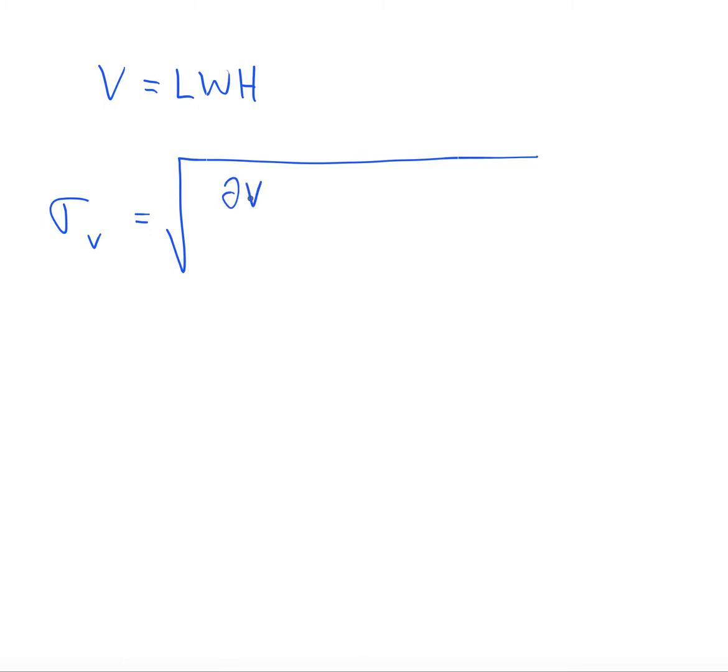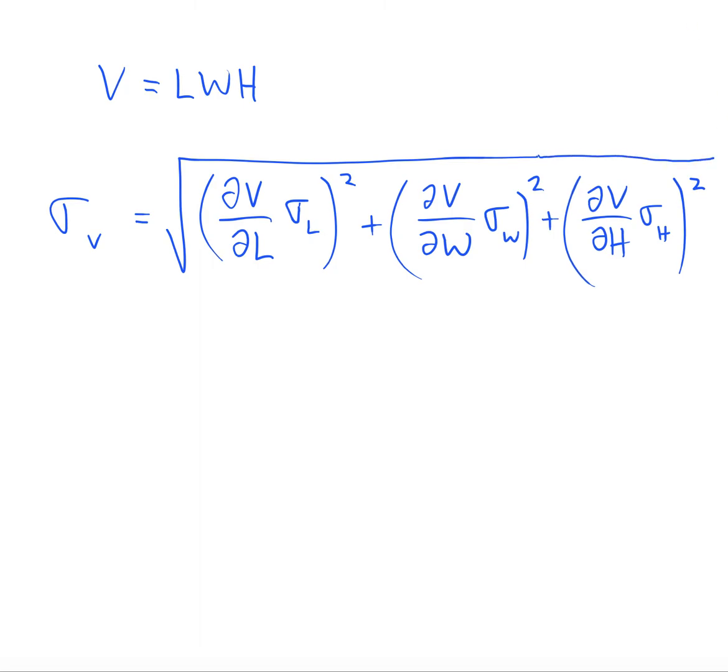And the true formula here for our uncertainty will be this: the square root of the partial derivative of V with respect to the first variable times the uncertainty in that variable, and then we'll square that. And we want to do the same thing for every variable that appears. This is going to be the formula that will give us our uncertainty in V more precisely for many functions. In this case, it's actually going to turn out to be the same as it was with the other method.